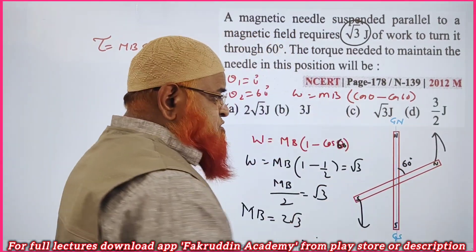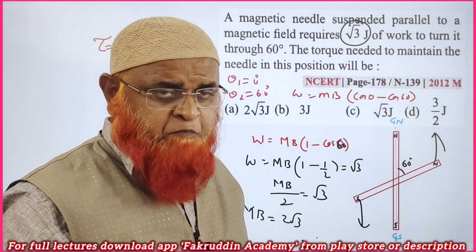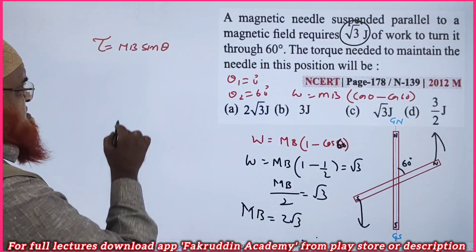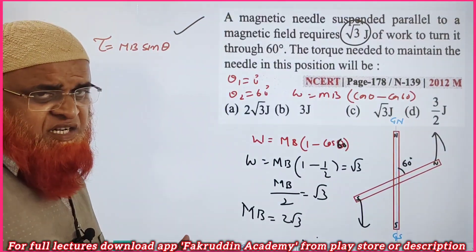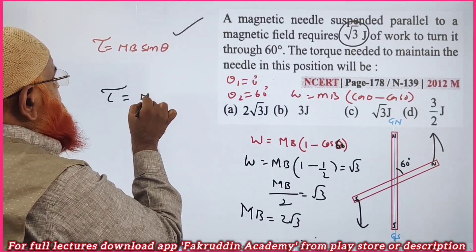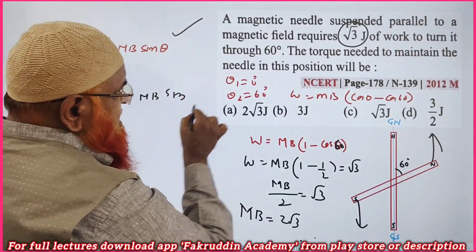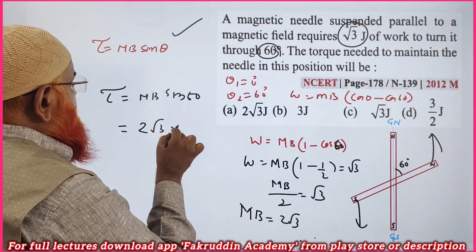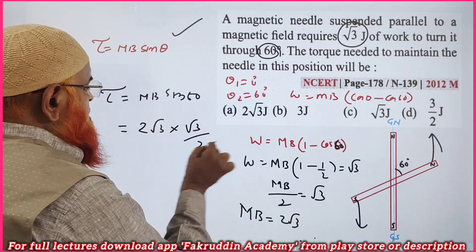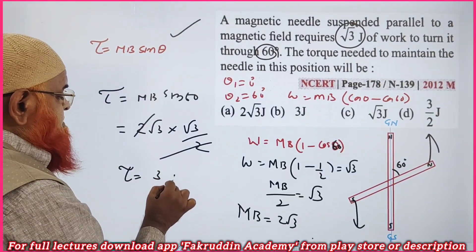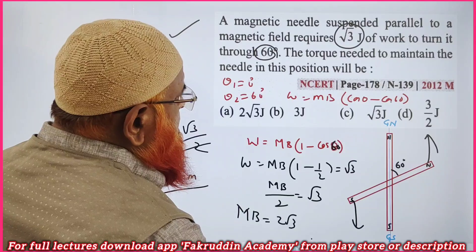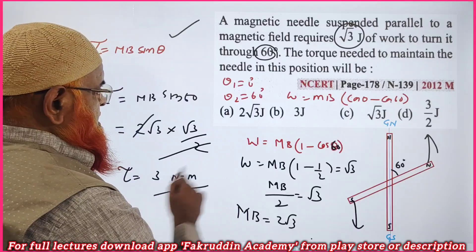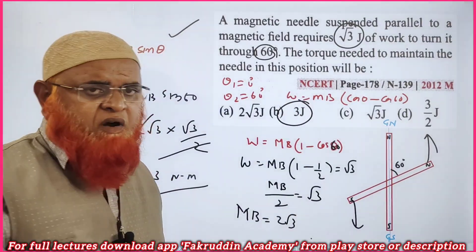Now we need to find the torque required to maintain the needle at 60° from the magnetic meridian to bring it back to alignment. Torque τ = MB sin 60° = 2√3 × (√3/2). The 2s cancel, giving τ = 3 Newton-meters. So the torque needed to maintain the needle in that position is 3 N·m.